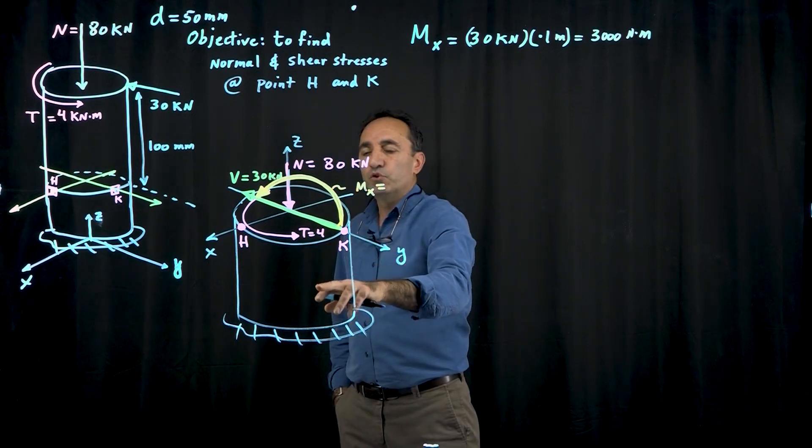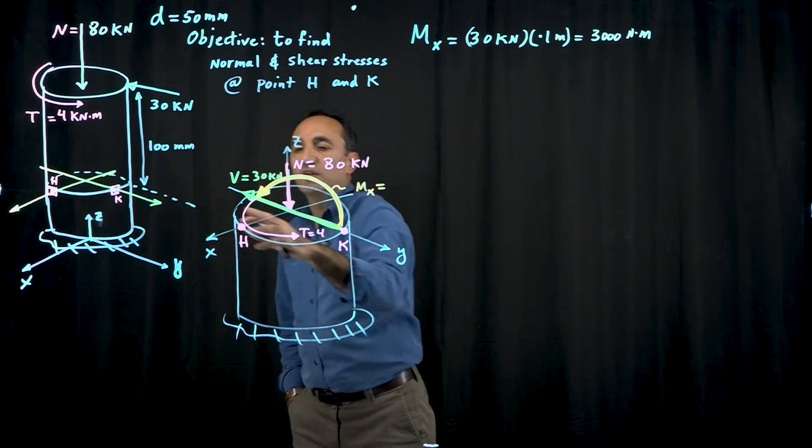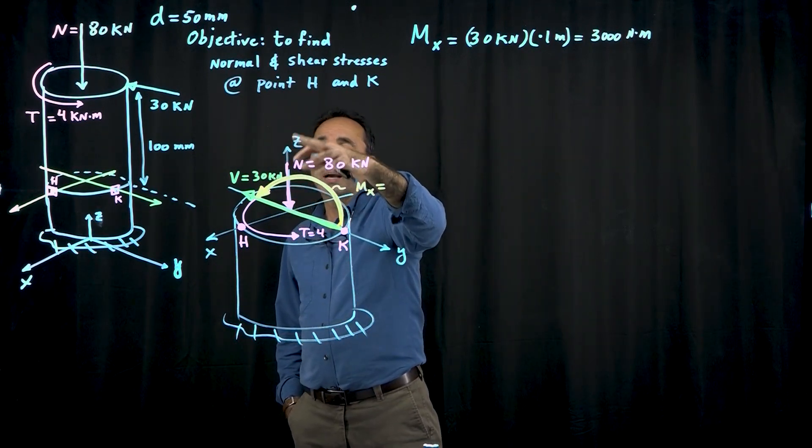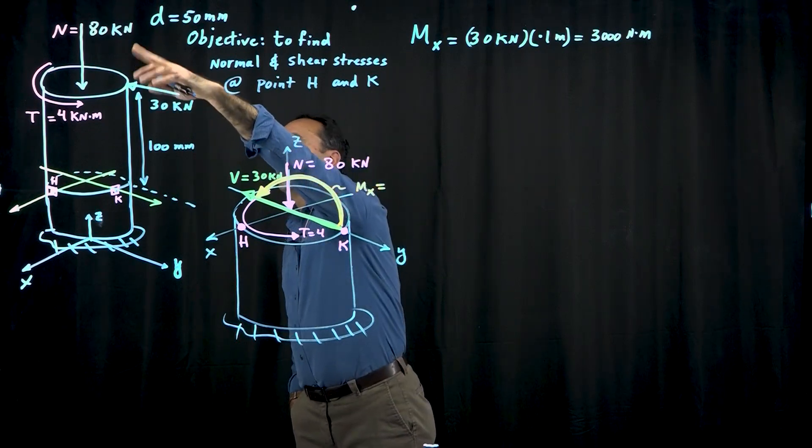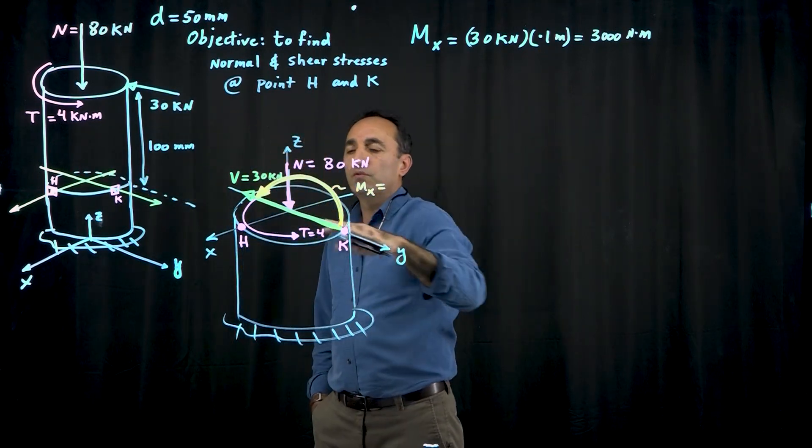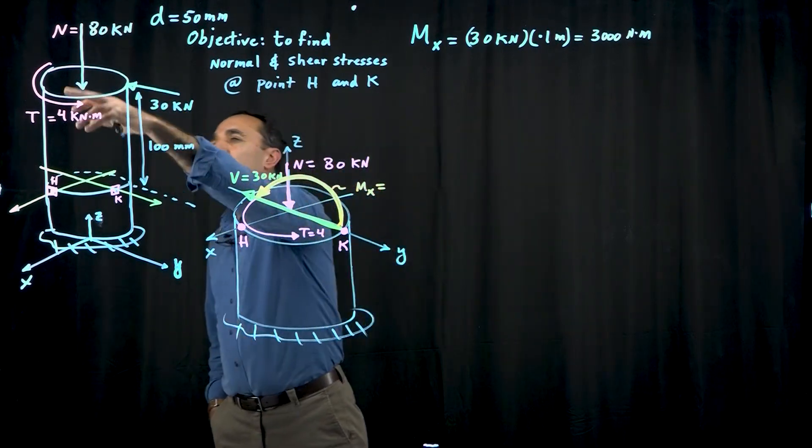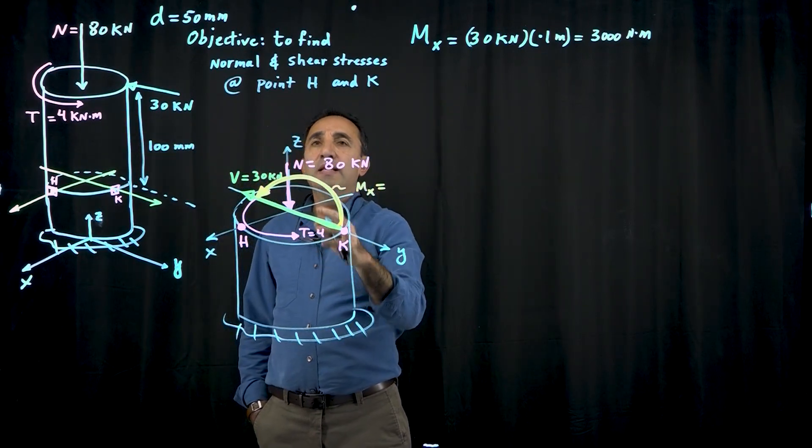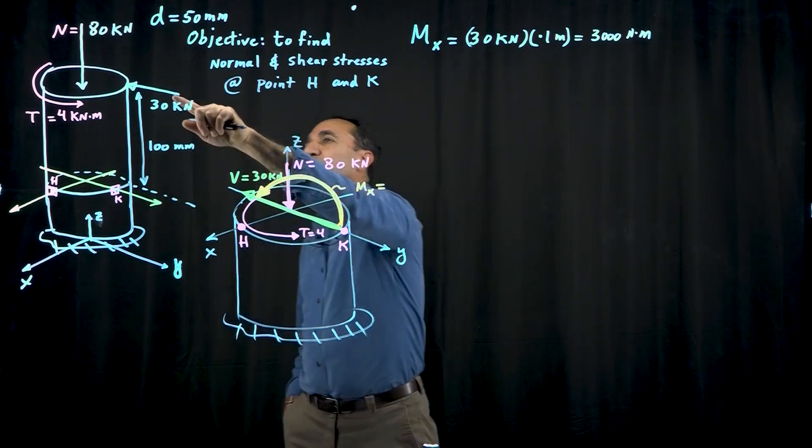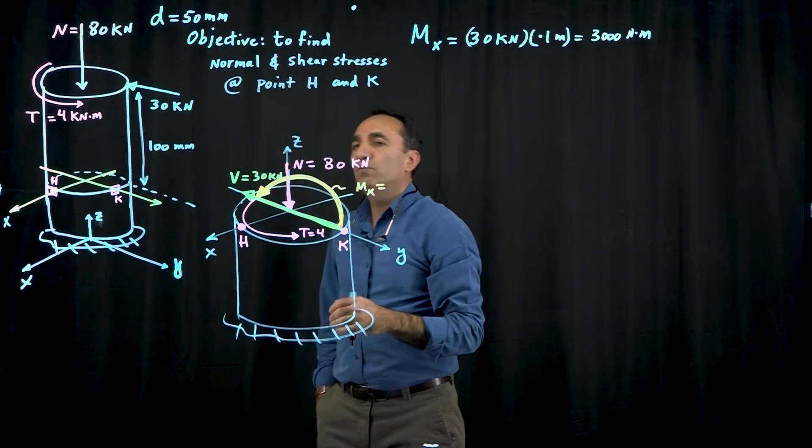I put together a diagram of this section. If we cut this section and show what forces and moments are here, we have the internal normal force due to the 80 kilonewton load. We also have the shear force in the negative y direction, and the 4 kilonewton meter twisting moment. But once you transfer this load to this section, you have to consider the moment of this load about this section.